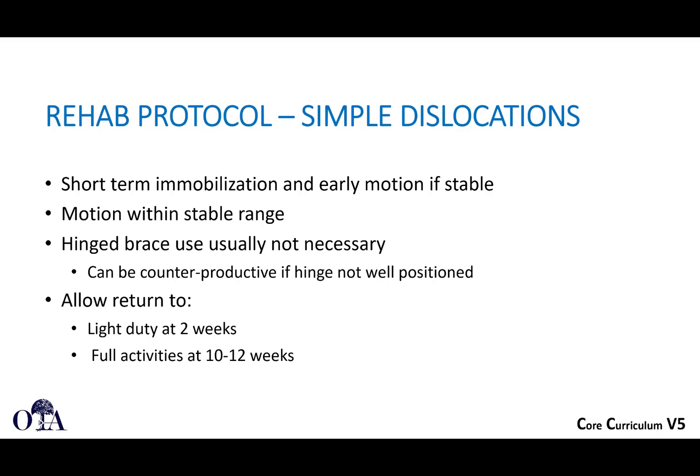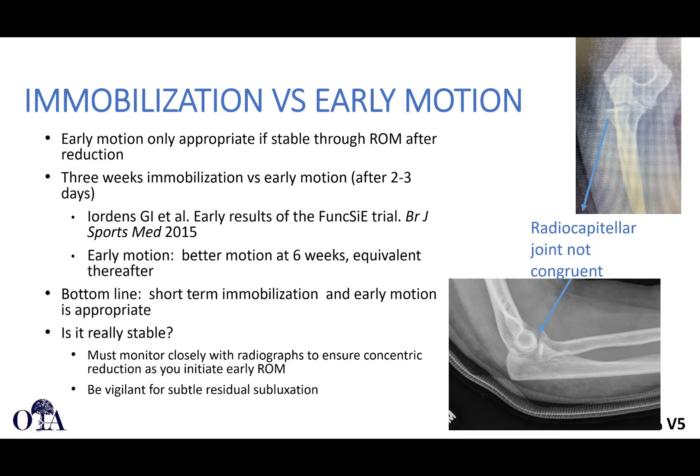For rehabilitation: short-term immobilization with early motion if stable, ensuring motion remains within a stable range and not going to full extension immediately. Hinged braces can be used but are usually unnecessary — if the hinge is misaligned or slides down, it can be counterproductive. Light duty can be allowed at approximately two weeks and full activity at 10 to 12 weeks.